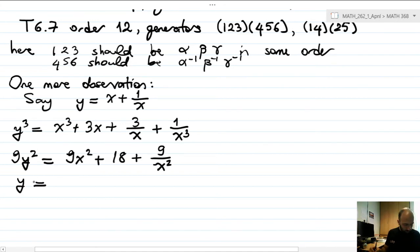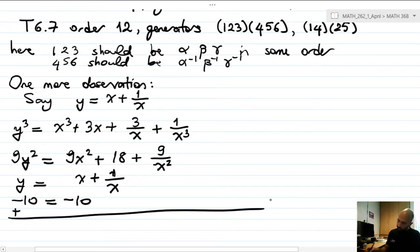We'll see why in a minute. This is 9x squared plus 18 plus 9 over x squared. Then let me write y which is x plus 1 over x, and also minus 10 as a constant. Now if we add these up, we see that y cubed plus 9y squared plus y minus 10 is equal to x cubed plus 9x squared.